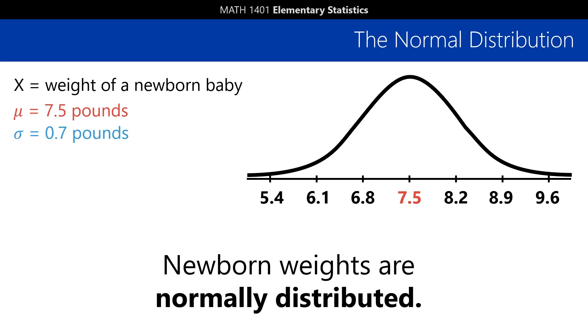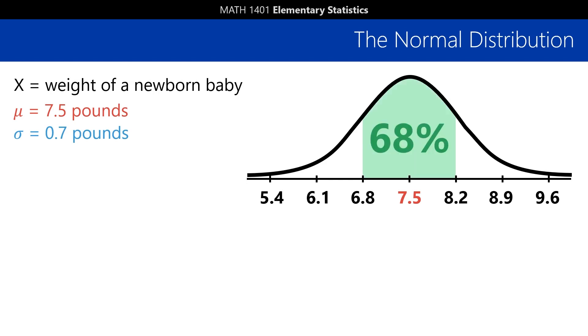This means that, for example, about 68% of newborns will have weights between 6.8 and 8.2 pounds, one standard deviation from the mean on either side, as you'll recall from the empirical rule.